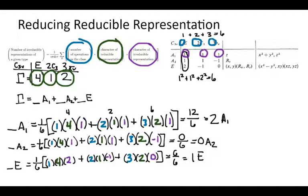So we can represent our reducible representation as equal to two A1s plus one E. What's nice about this is it's self-checking: if you get a number that can't be divided by the order, you know something is wrong. And so we have our reducible representation expressed as the sum of irreducible representations.